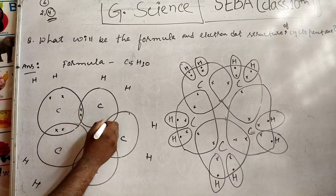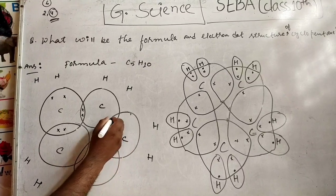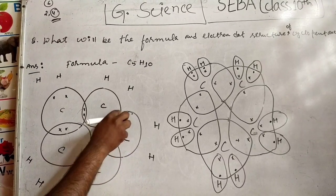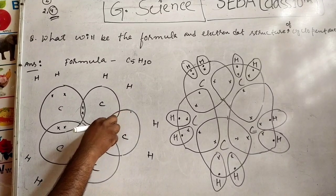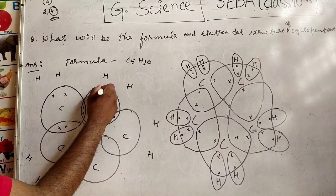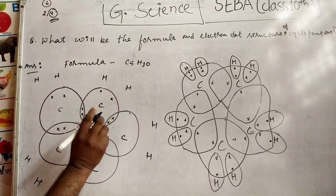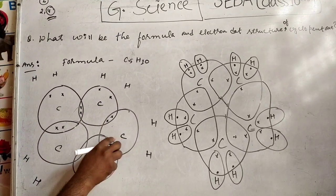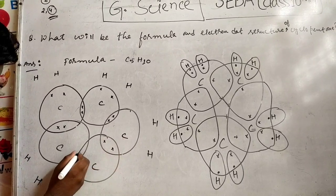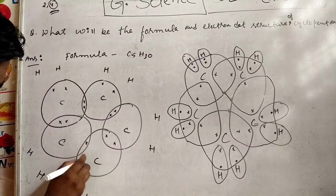In this problem, this one is common, these two. So total four cross - this one carbon electron and this carbon electron. This carbon and this carbon.